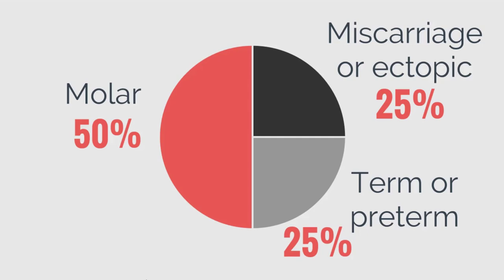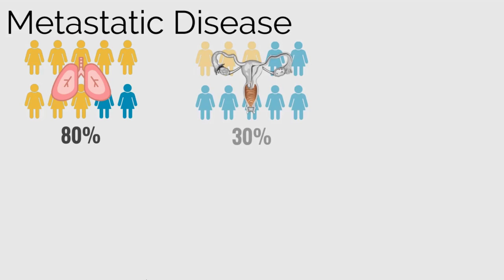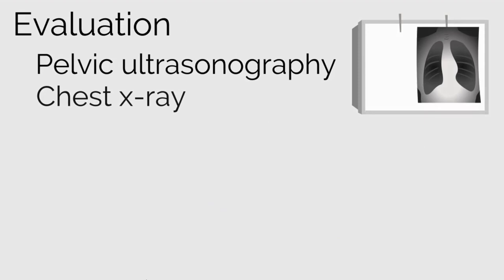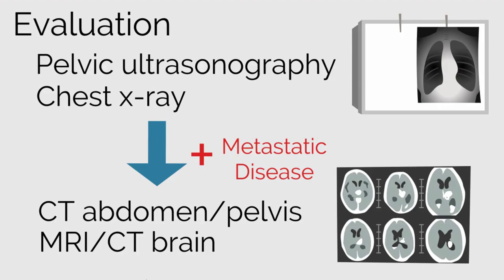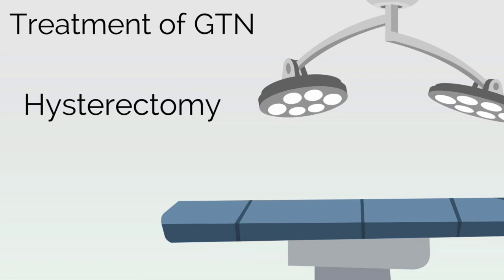Choriocarcinomas originating from complete molar gestations account for the most cases of metastatic disease. The most common site of spread is the lungs — 80% of women with metastatic disease will have pulmonary involvement — followed by vagina (30%), pelvis (20%), liver (10%), and brain (10%). Pelvic ultrasonography and chest X-ray are ordered to assess for metastasis; if metastatic disease is found, CT of the abdomen/pelvis and MRI or CT of the brain should be ordered. Biopsy should be avoided since GTN tissue is highly vascular. Treatment is primarily chemotherapy; hysterectomy is an option for disease confined to the uterus in women not desiring future fertility, and brain GTN is treated with radiation therapy on an emergent basis.